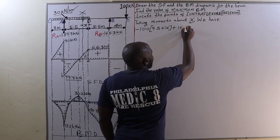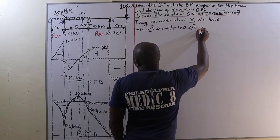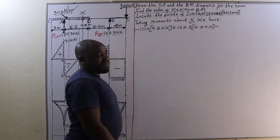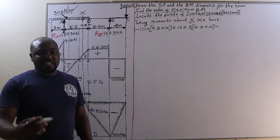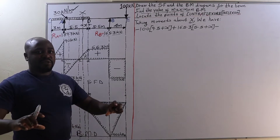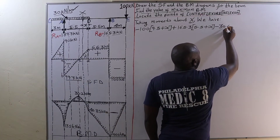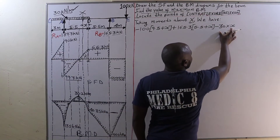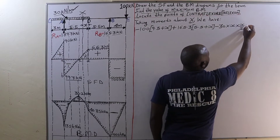Then we add 165.3 kilonewtons times the distance from B to x, which is 5.5 plus x meters. Finally, we have a UDL between point D and point x — a uniformly distributed load of 30 kilonewtons per meter distributed over a span of x meters, giving 30 times x, acting at the mid-span of D and x.